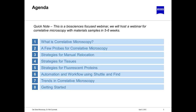I wanted to provide a quick note that this is a biosciences-focused webinar. We will host an additional webinar for correlative microscopy for materials science samples in about five to six weeks, and we'll send out a notice when that's ready. Today's agenda covers: defining what correlative microscopy is, probes you can use, strategies for manual relocation, strategies for tissues, strategies for fluorescent proteins, and automation and workflow using Shuttle and Find. Towards the end, I'll get into trends in correlative microscopy and tips for getting started if you're interested in this technique for the first time.